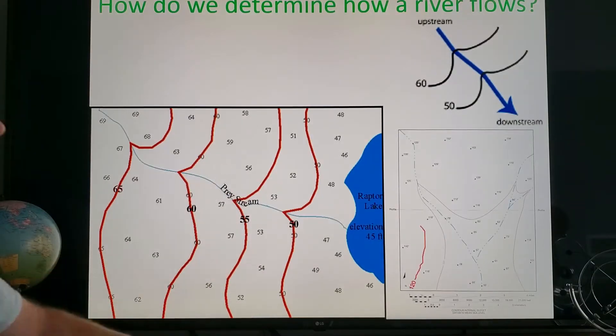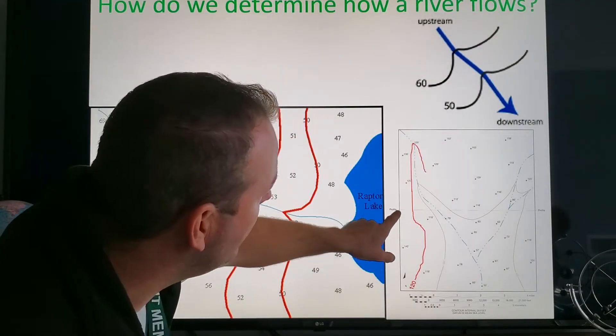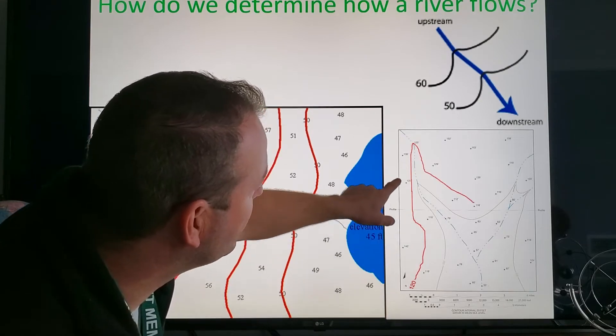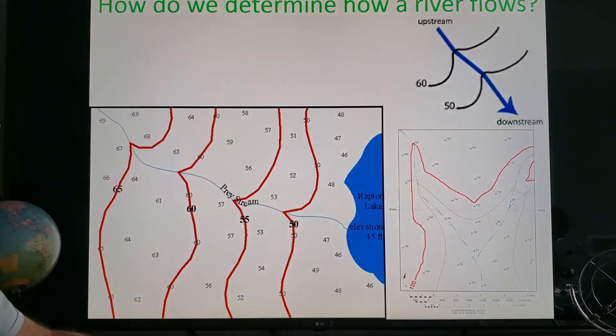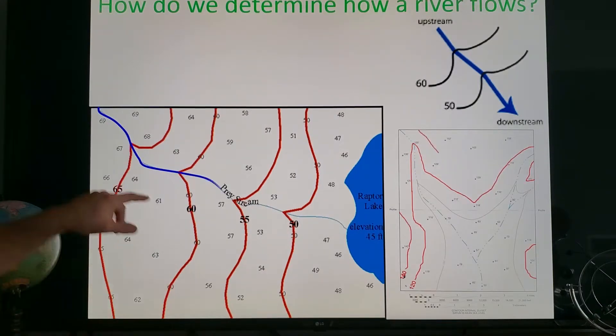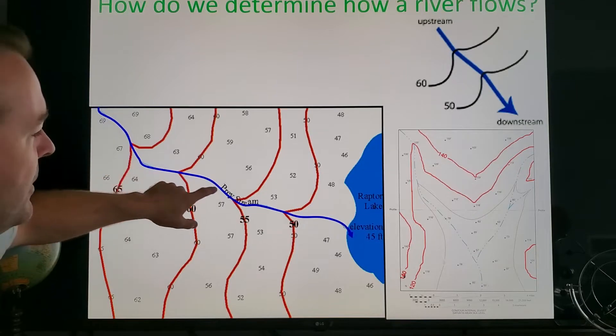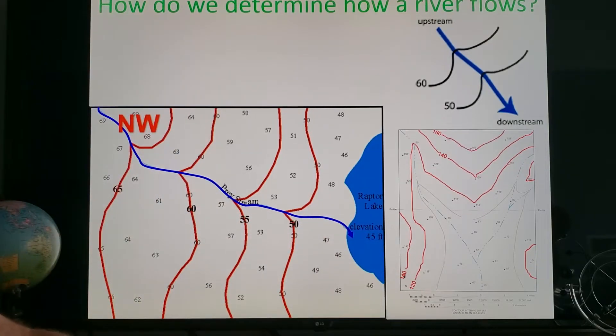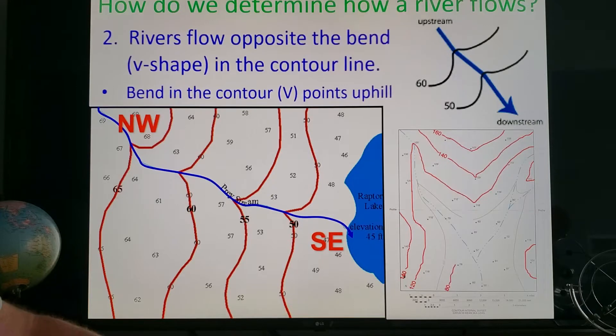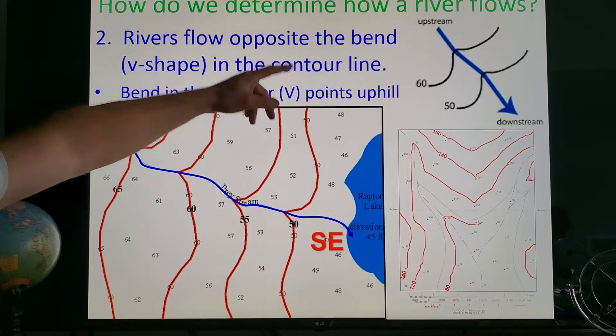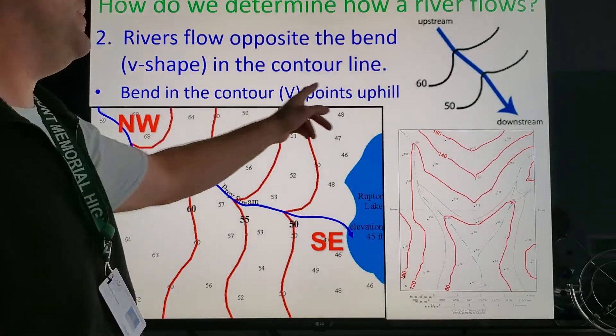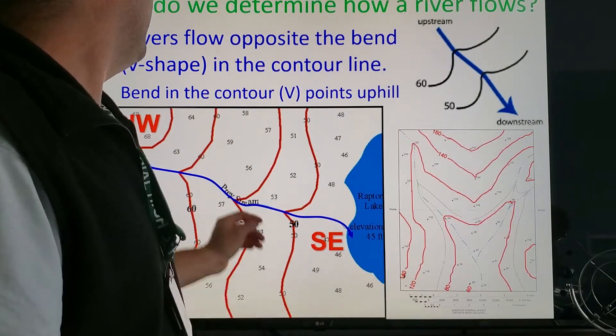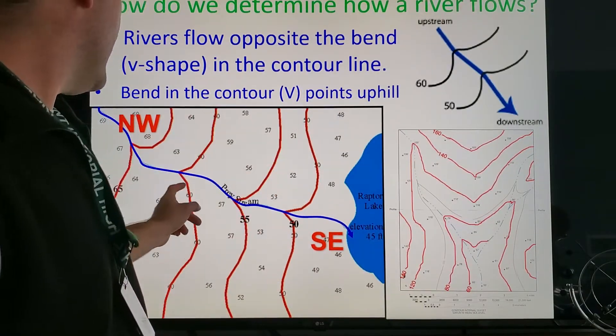On the side here you'll see the contour lines forming. As they cross the river they bend uphill. You'll see that simulation running there. Also once again you can see decreasing numbers of elevation. Again this is a northwest to southeast scenario. But the second rule is get it down—the rivers flow opposite the bend or the V shape in the contour line. The V always points uphill.